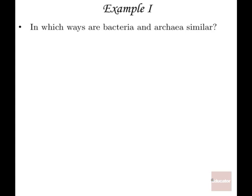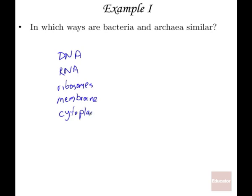A great way to learn about things is to see in what ways they're similar and in what ways they are different. So we can construct a table, and on one side we can list different qualities: DNA, RNA, ribosomes, the membrane — where we know there might be some differences — and the cytoplasm, which may be similar or different.